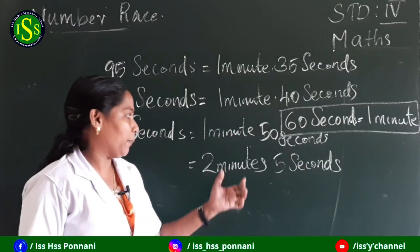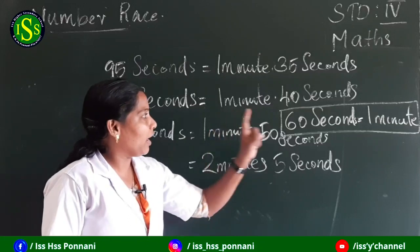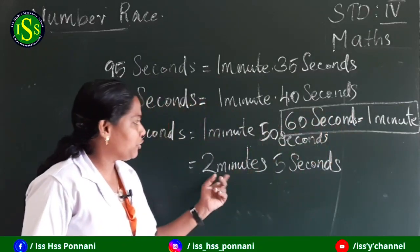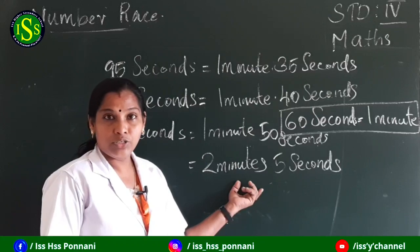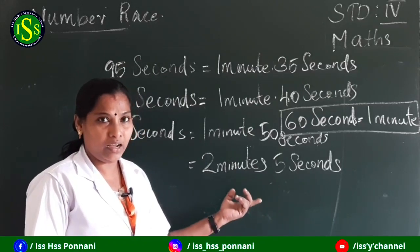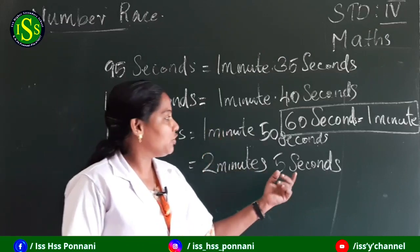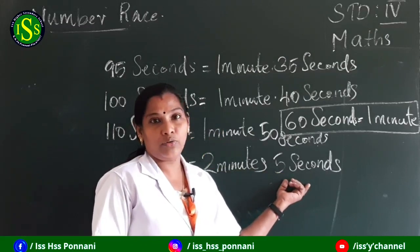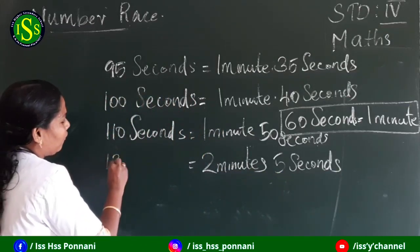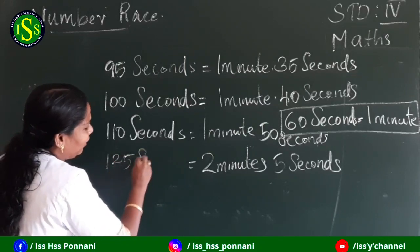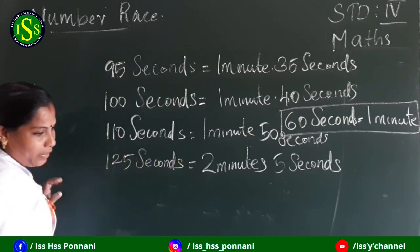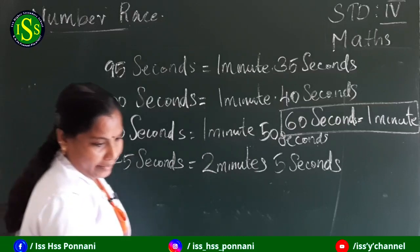How many seconds in 2 minutes? 1 minute is 60 seconds, so 2 minutes is 60 plus 60 equals 120 seconds. Then 2 minutes 5 seconds is 120 plus 5, which is a total of 125 seconds.